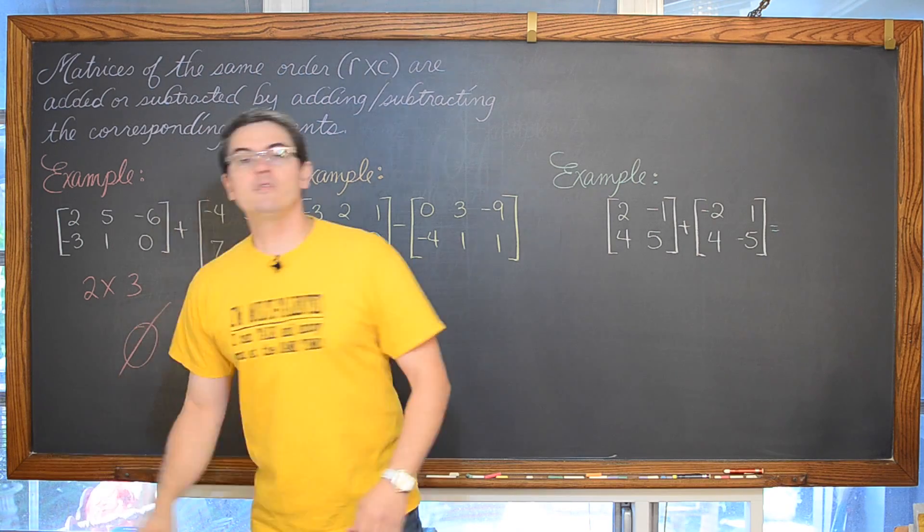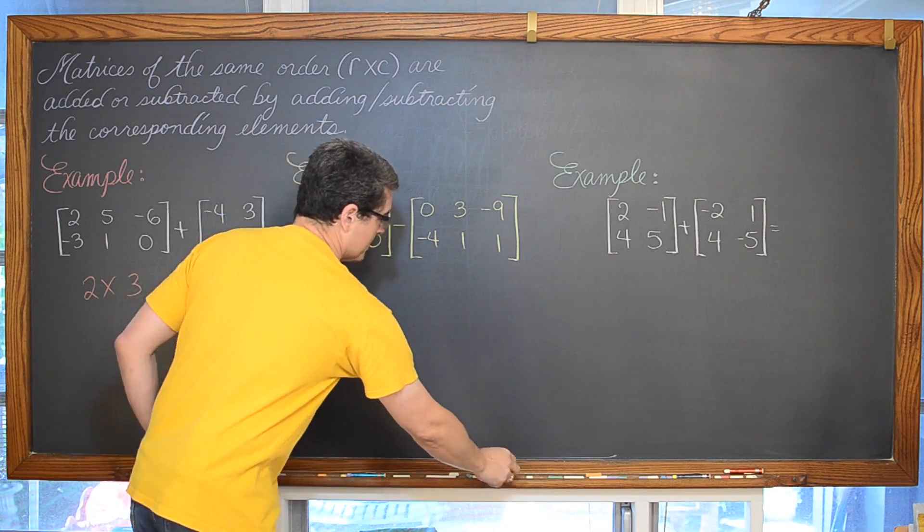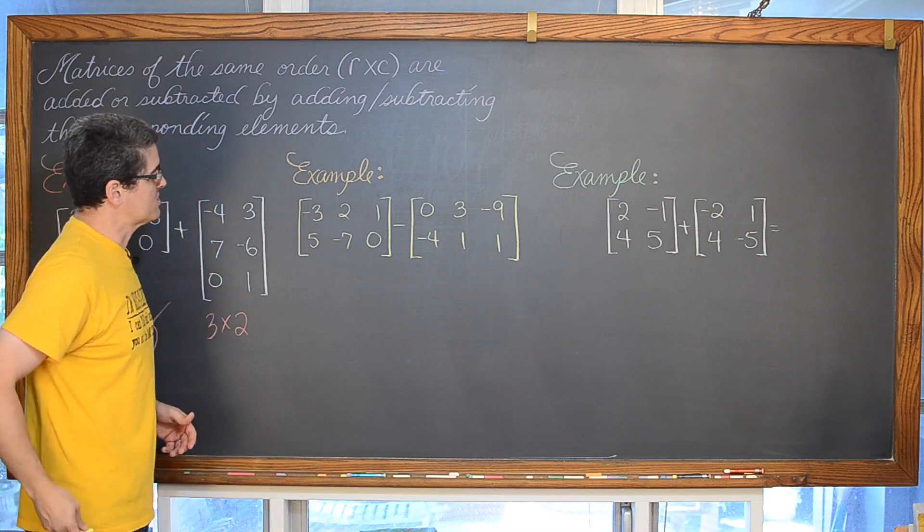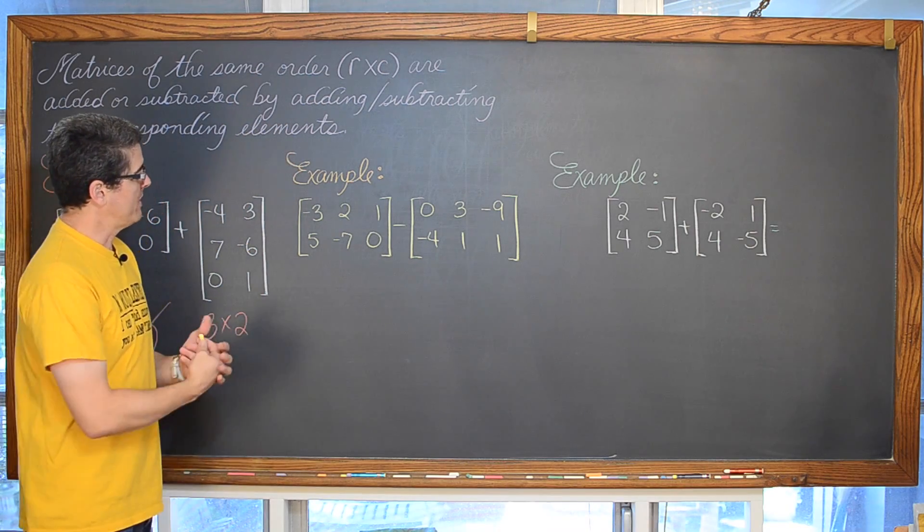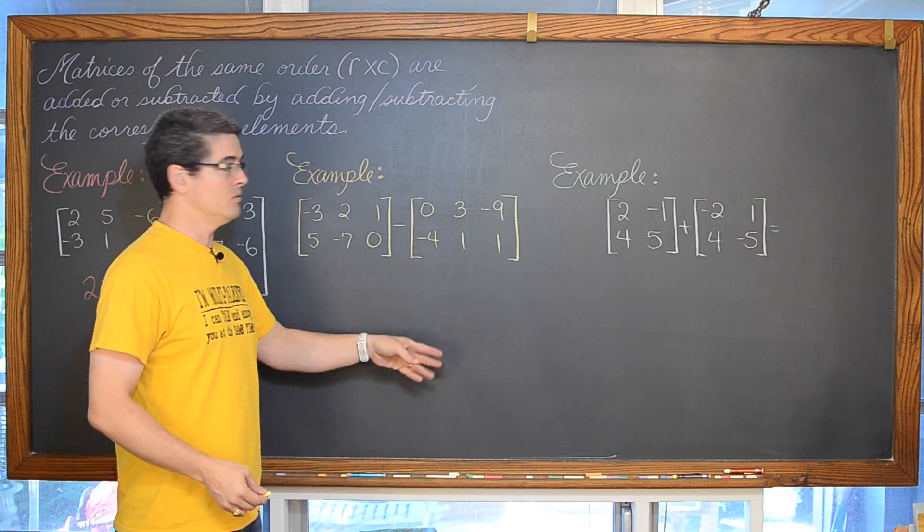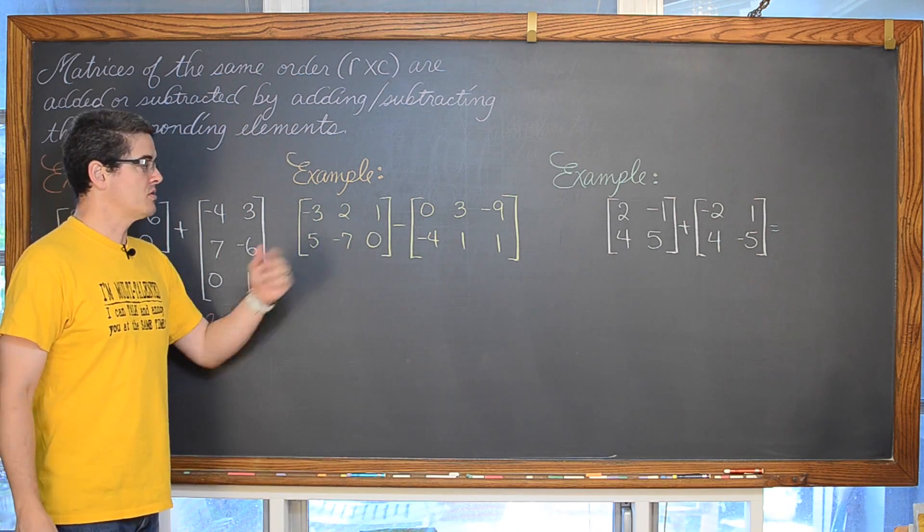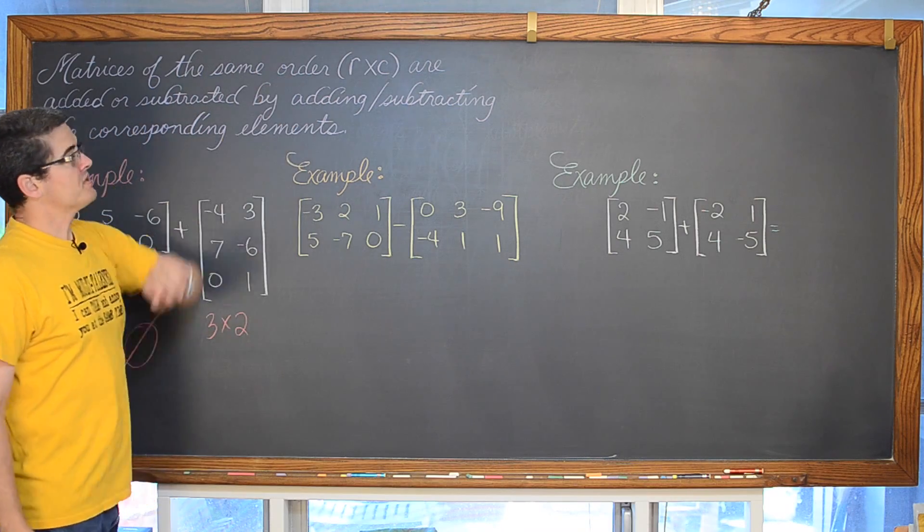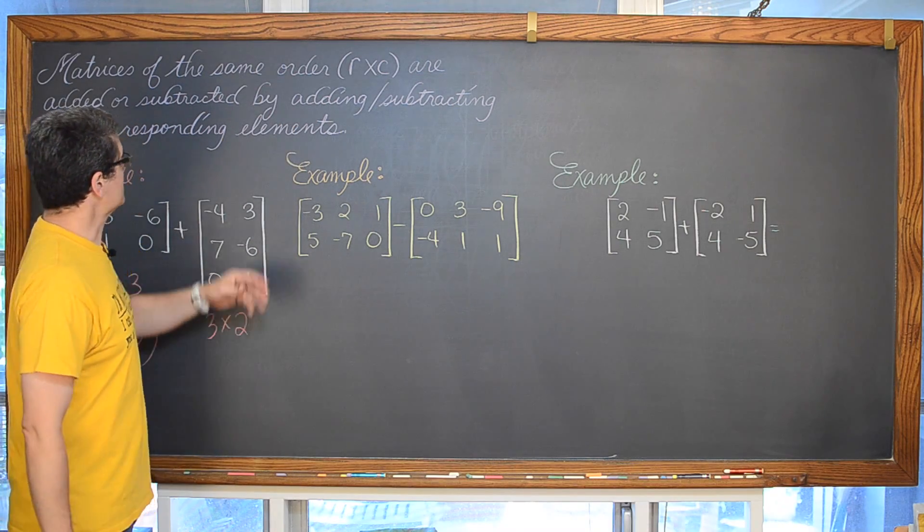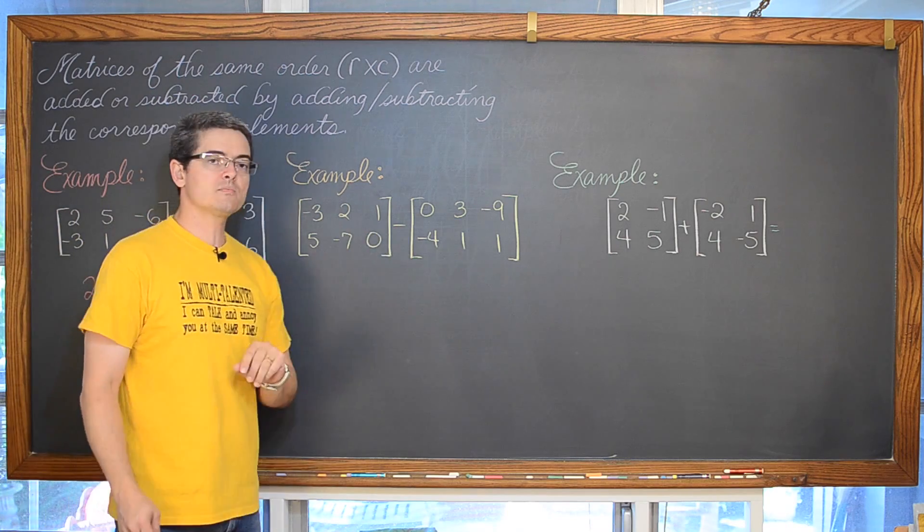Bada bing, bada boom, moving on. Now over here, I am going to work all of this out because this might be the first time you have ever seen addition or subtraction with matrices. We do have two rows and three columns and two rows and three columns. So now we are going to add or subtract two matrices of the same order. And again, you just match up those corresponding elements and add or in this case subtract them.